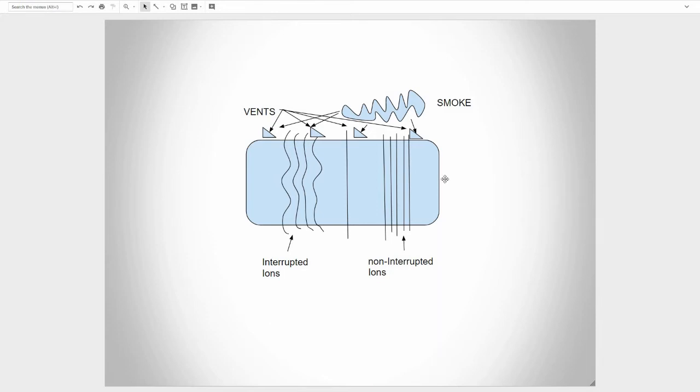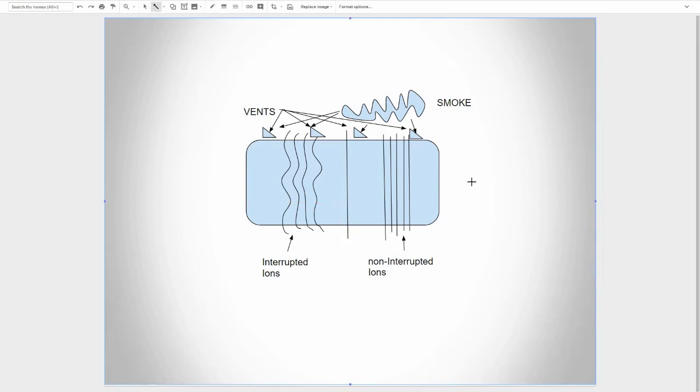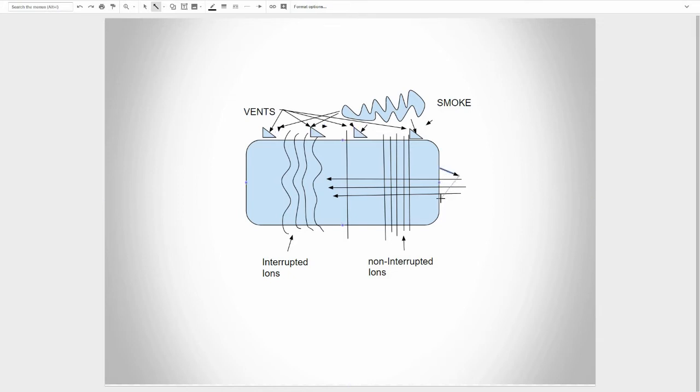So basically we will have smoke that will come in through here, but this is just a representation, usually it would come through the vents but some ionization chambers are different, some have vents at the front, but we will have smoke come in through here, it will start interrupting these ions and then it's not going to exactly look like that but it's going to interrupt it and that's just a good representation I found of it that I was able to make.